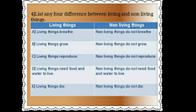First: living things breathe; non-living things do not breathe. Second: living things grow; non-living things do not grow. Third: living things reproduce; non-living things do not reproduce. Fourth: living things need food and water to live; non-living things do not. Fifth: living things die; non-living things do not die.